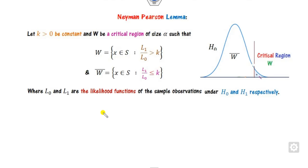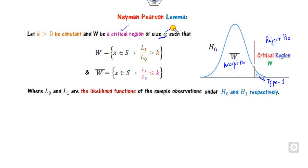Firstly we will discuss the statement of the Neyman-Pearson lemma. If you have a critical region W corresponding to the null hypothesis H0 — this is the rejection region — and alpha is called the Type I error, then for any element lying in this critical region W, L1 (the likelihood function under H1) and L0 (the likelihood function under H0): the ratio L1/L0 will be greater than K.